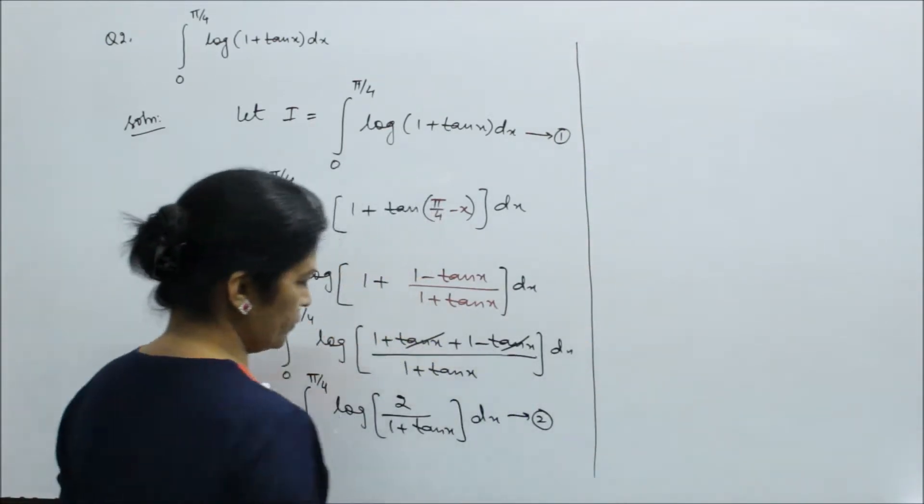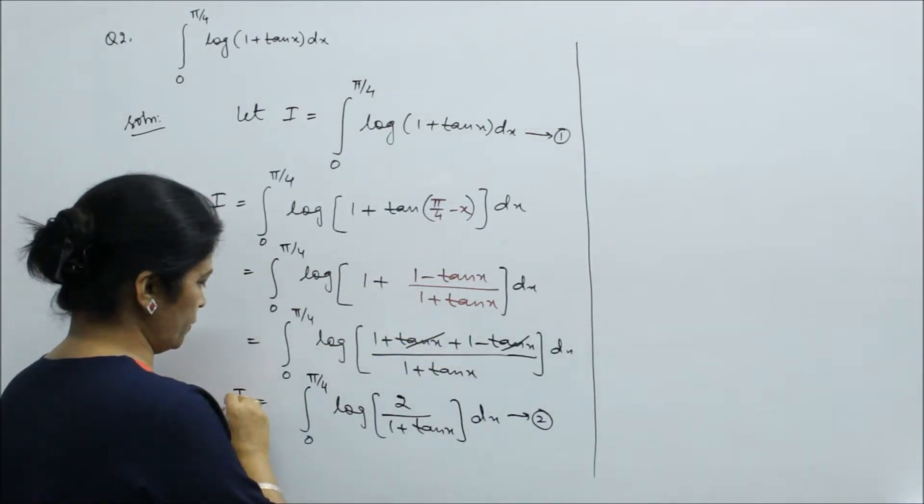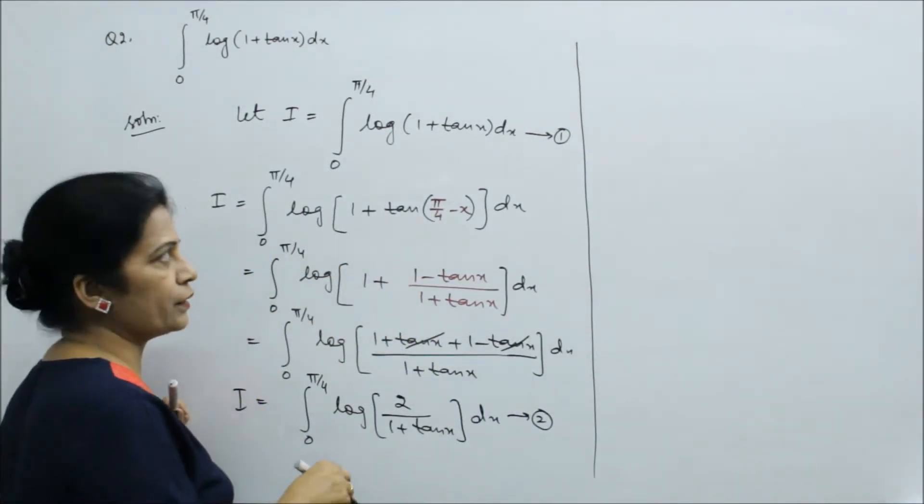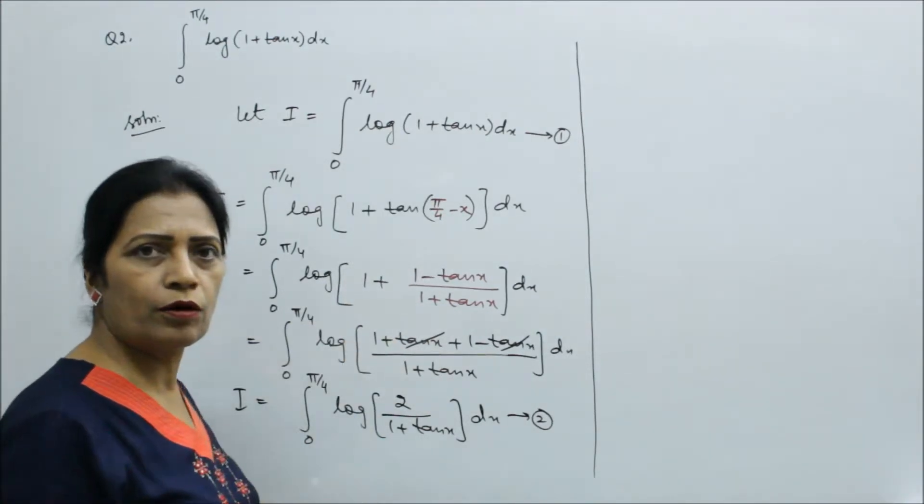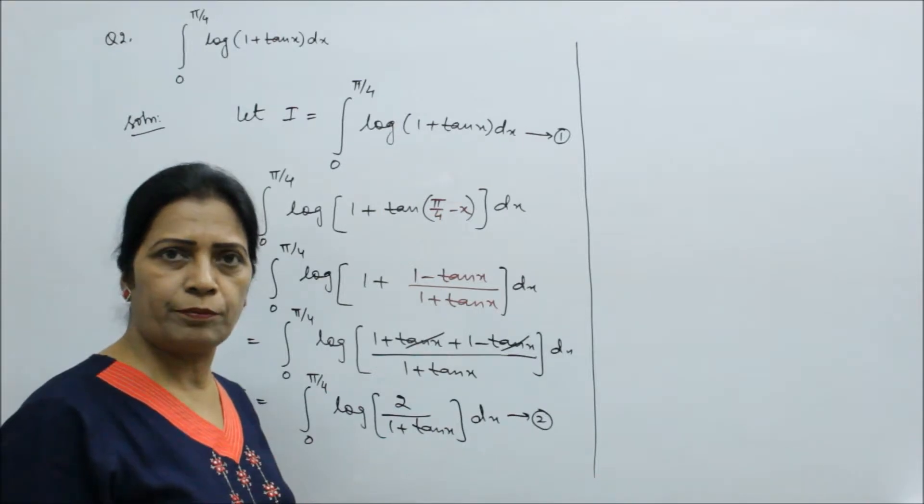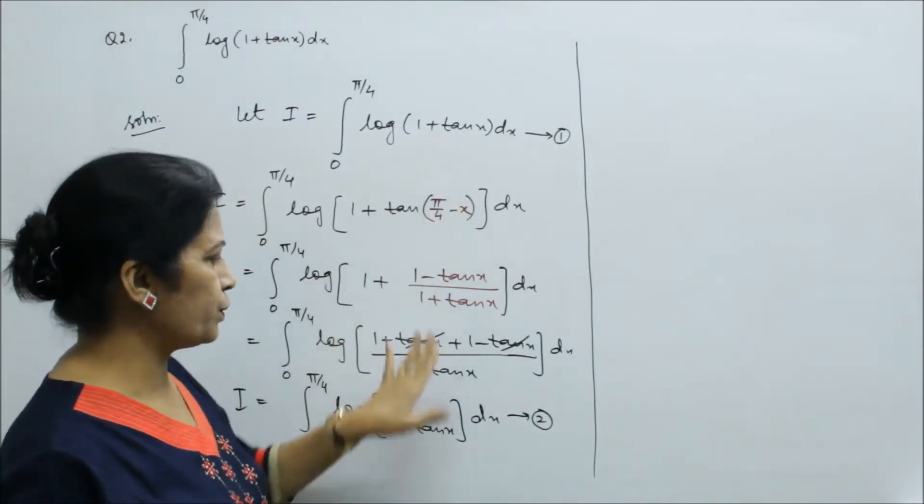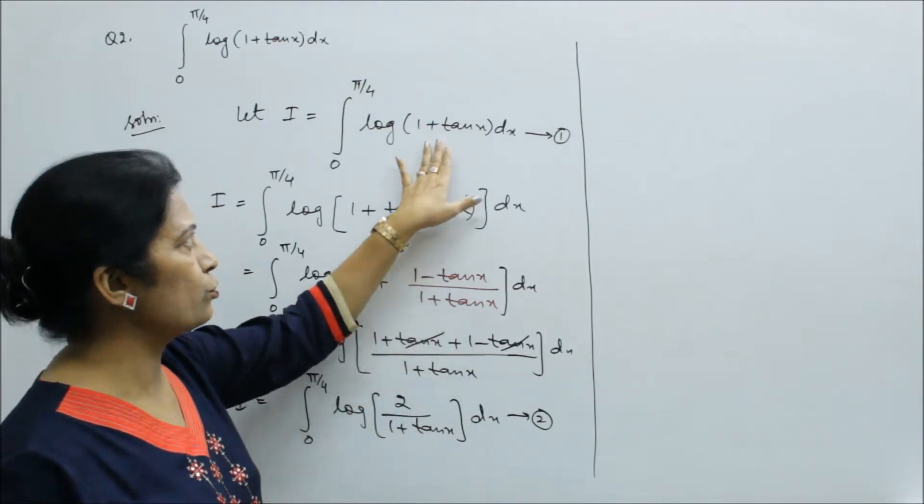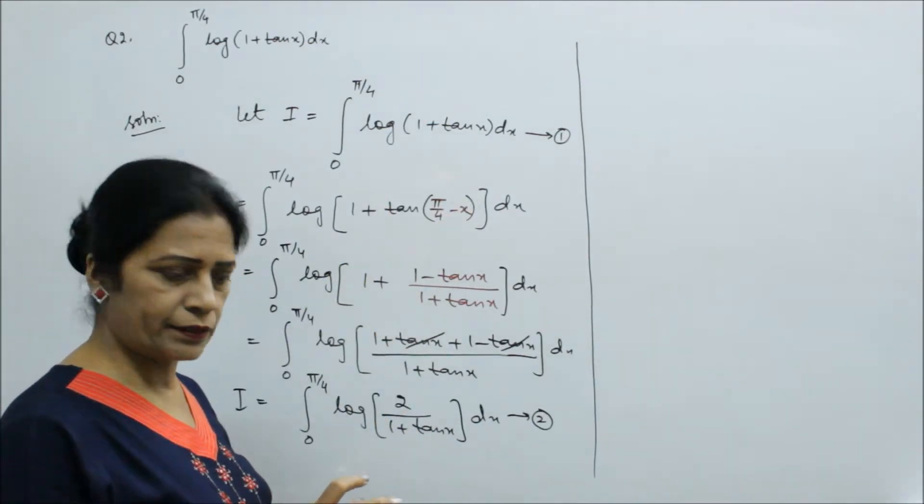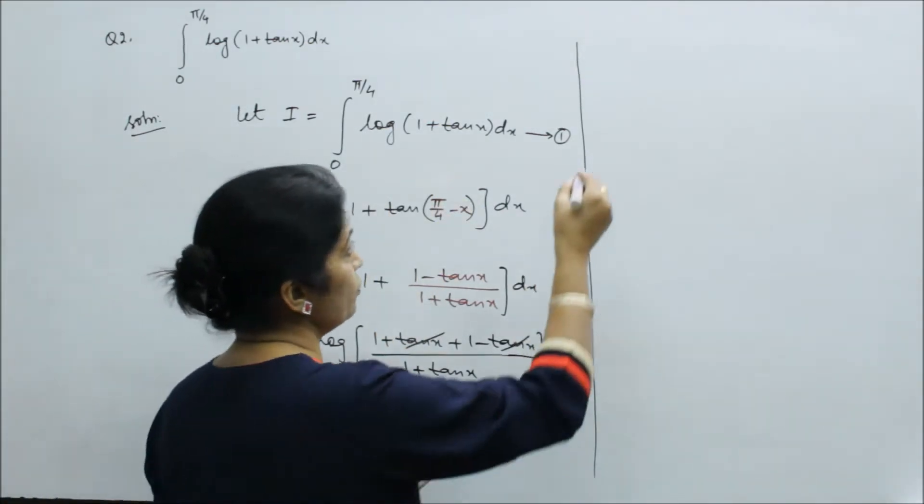Then, these are the two equations. We will add both equations. If we add them, the log property is that when we take log common, both expressions multiply. When they multiply, you can see 1 + tan x will cancel. So the next step is, we have added both equations.